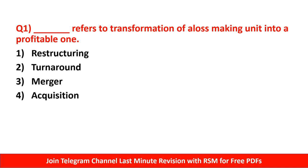Question number 1: Dash refers to transformation of a loss-making unit into a profitable one. These are different types of strategies - strategy means long-term planning. Some companies are loss-making and we need to transform them into profit-making units. The options are: restructuring, turnaround, merger, and acquisition. The right answer is turnaround.